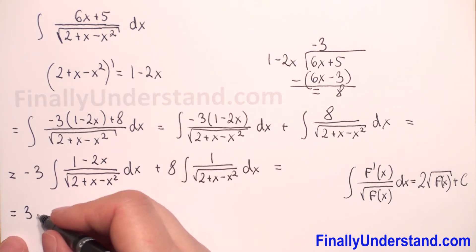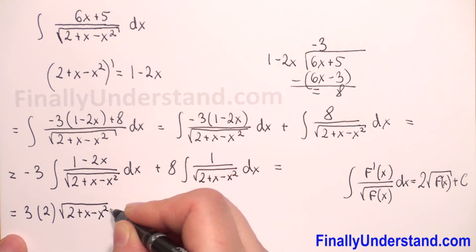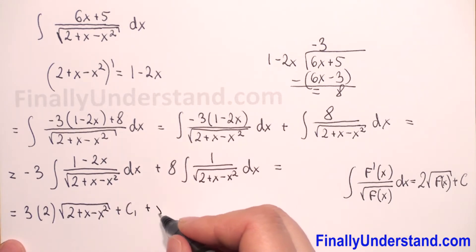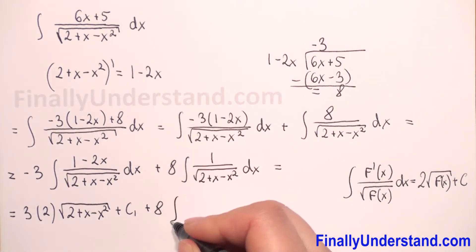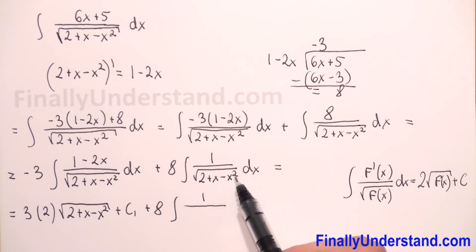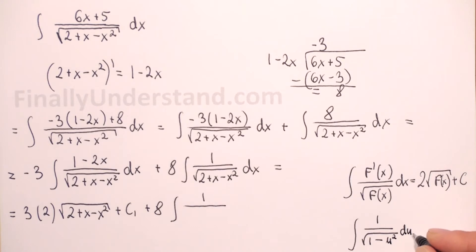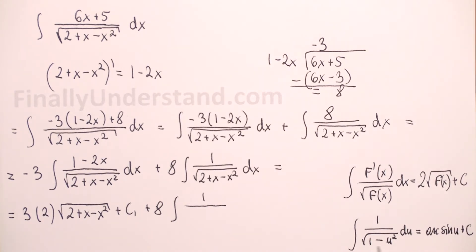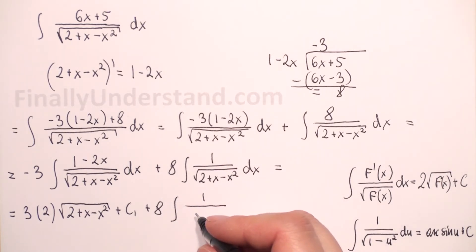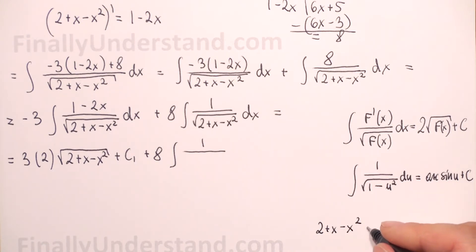Applying that formula, the first integral gives negative 3 times 2 times the square root of 2 plus x minus x squared plus constant C1. For the second integral, we have 8 over the square root, and since we have negative x squared under the square root, we need to rewrite it in the form 1 over the square root of 1 minus u squared, which integrates to arc sine of u plus constant.